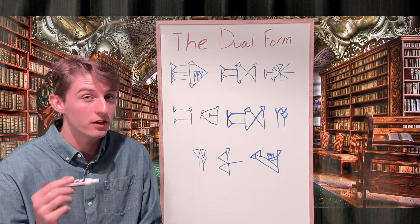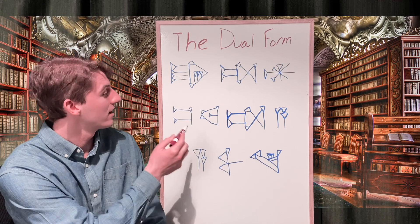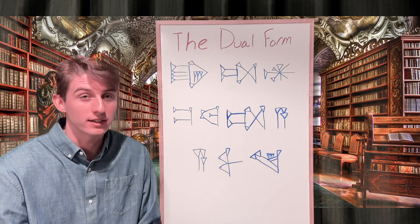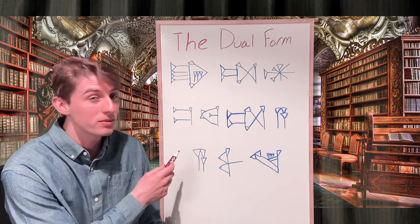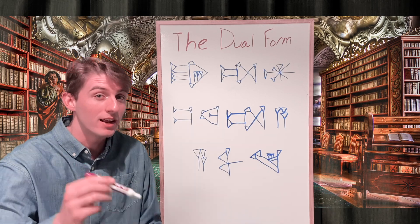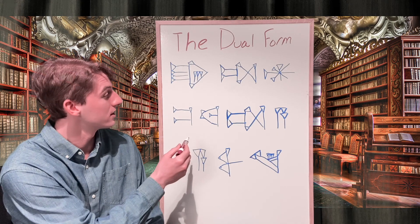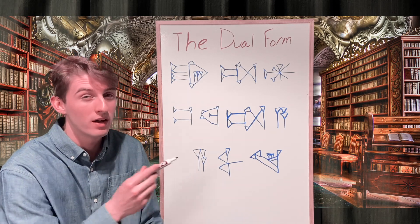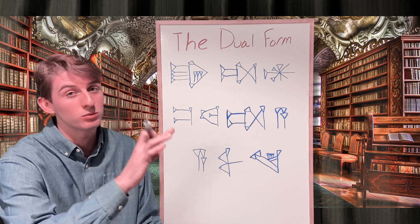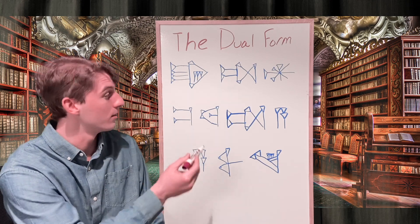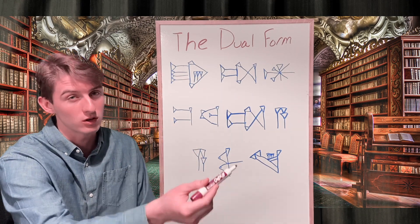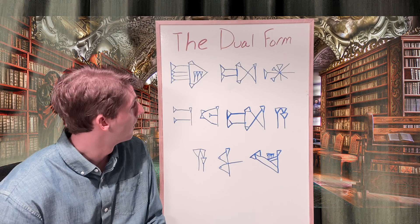That covers what you need to know about the dual. Here I have a cuneiform example for us to practice what we've learned. What I'd recommend doing is pausing the video and using the sign list and Akkadian dictionary, which I've linked in the bio below, to try to translate for yourself. If you want to try to translate only from transliteration, you can wait and I'm going to pause halfway through so you can also give that an attempt.